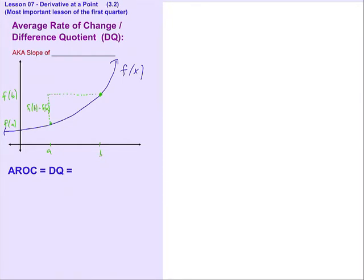That's the rise. And the x distance, that right over there, we would label that as b minus a. The change in the x values.